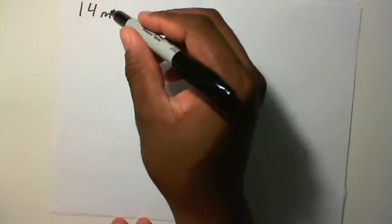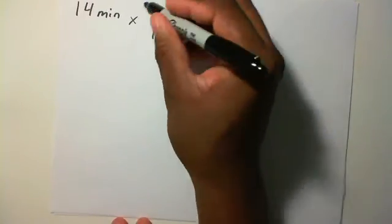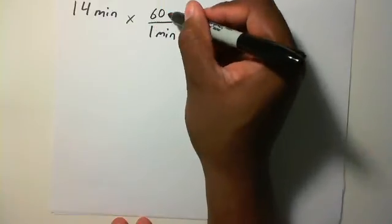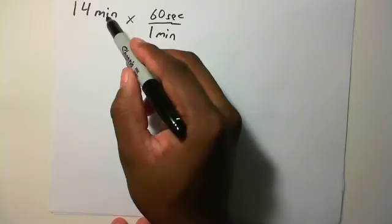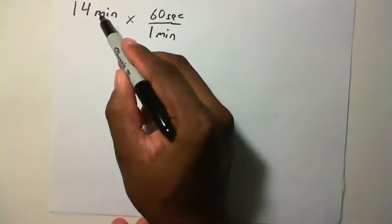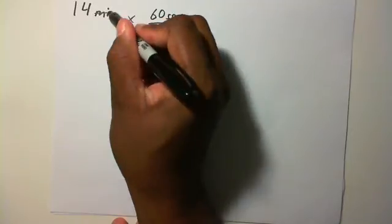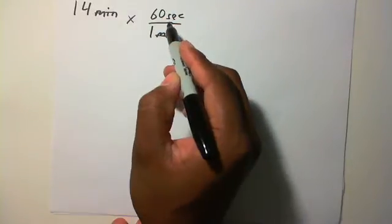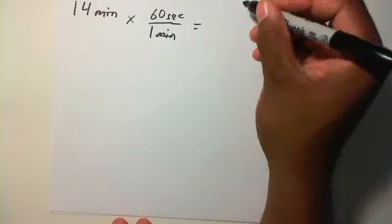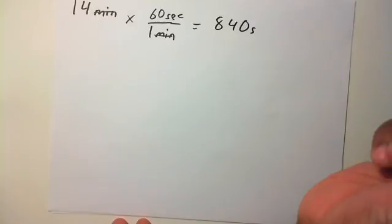You want to get rid of minutes, so you want minutes on the bottom. You want one minute on the bottom and you want seconds, so you want 60 seconds on the top. You see this minute unit here and this minute unit there. These two minute units cancel. And you're left with 14 times 60 seconds, which equals 840 seconds.